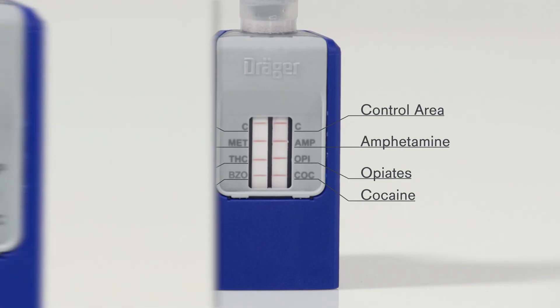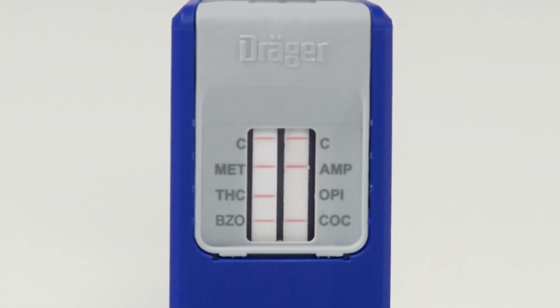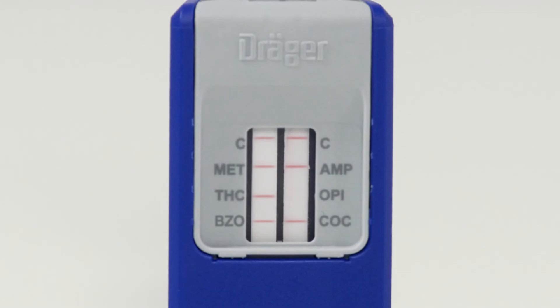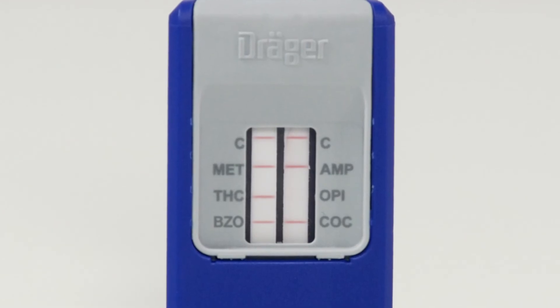If a line appears in the upper control area, but no line appears next to one of the substances, the test is positive. This test is valid and positive for opiates.